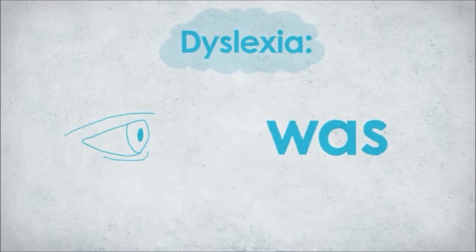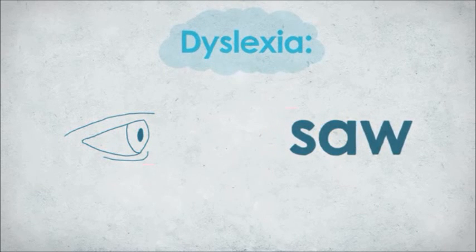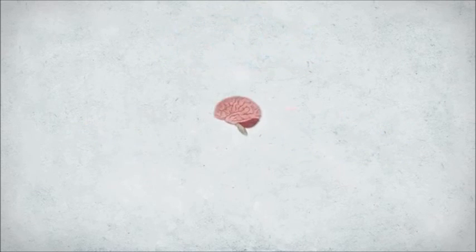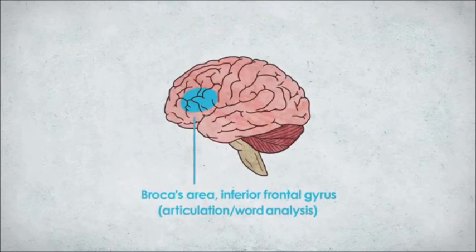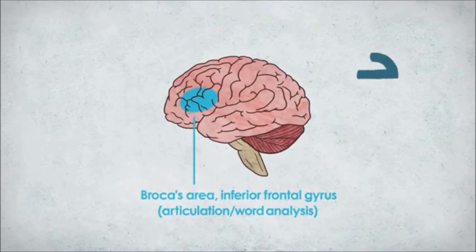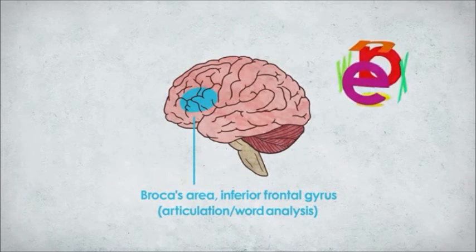The truth is, people with dyslexia see things the same way as everyone else. Dyslexia is caused by a phonological processing problem, meaning people affected by it have trouble not with seeing language, but with manipulating it.